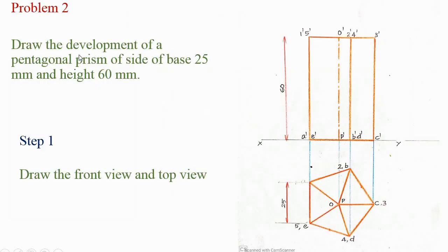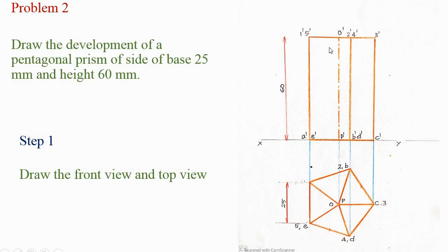Draw the development of a pentagonal prism of side of base 25 mm and height 60 mm. Draw a pentagon of 25 mm size. In the top view you will have a pentagon and in the front view you will have a rectangle. Name the vertices as A, B, C, D, E on the bottom surface and the top surface as 1, 2, 3, etc.